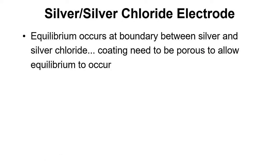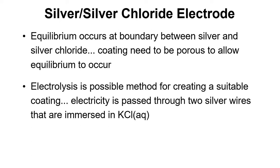The equilibrium occurs at the boundary between the silver and the silver chloride, so it's important that the coating is porous to allow this equilibrium to occur. It's possible to use electrolysis: if you put two silver wires into a KCl solution and pass electricity through one of those wires, you'll get a porous silver chloride coating.